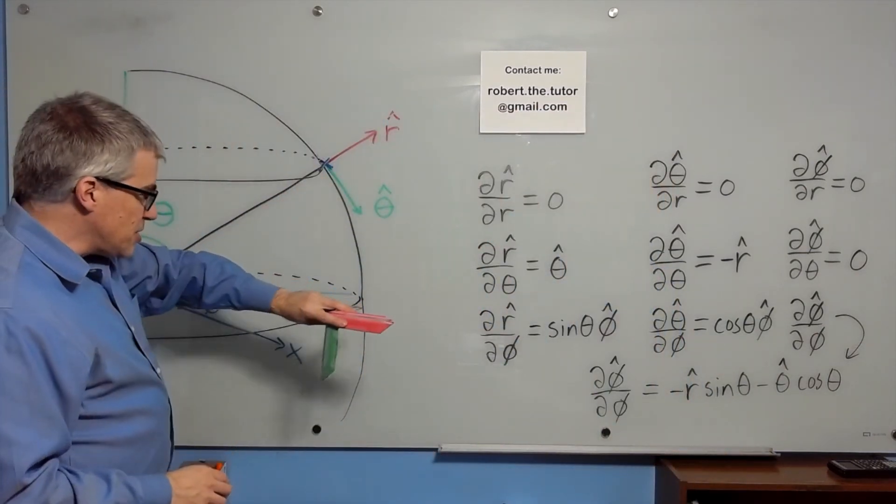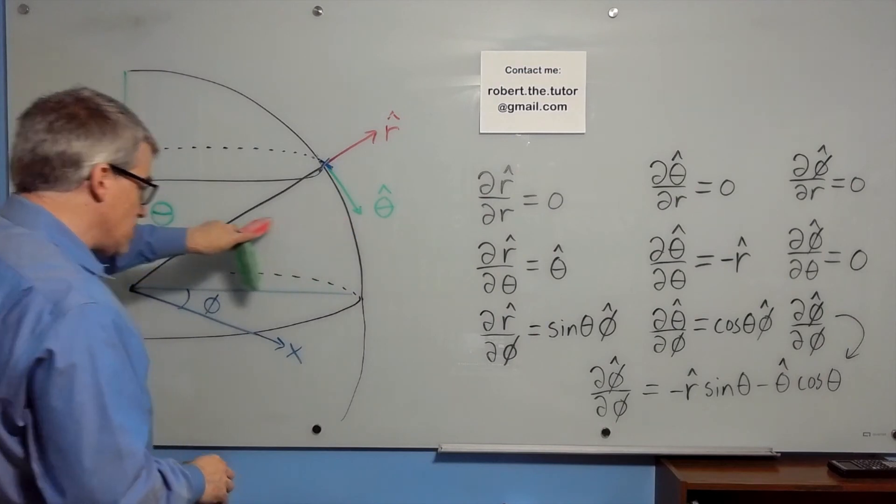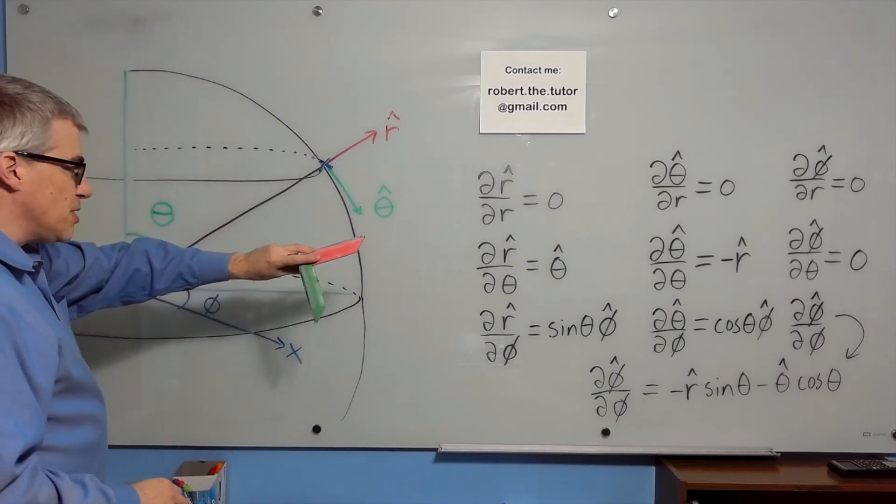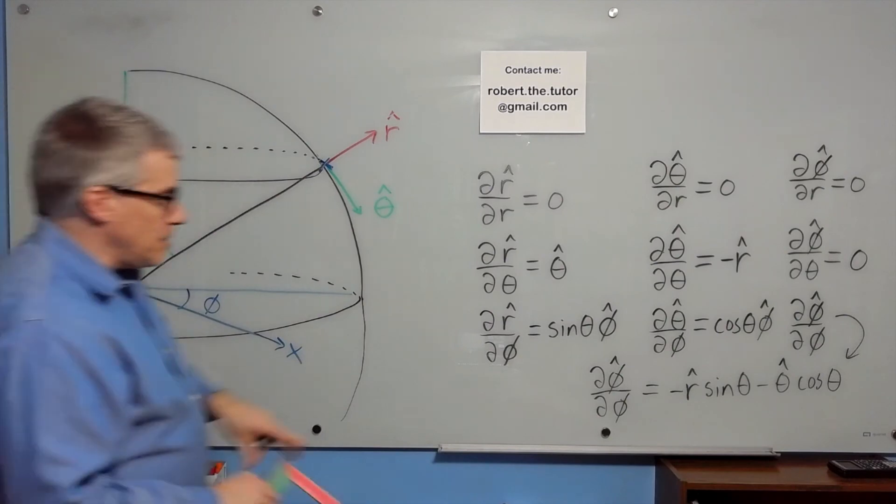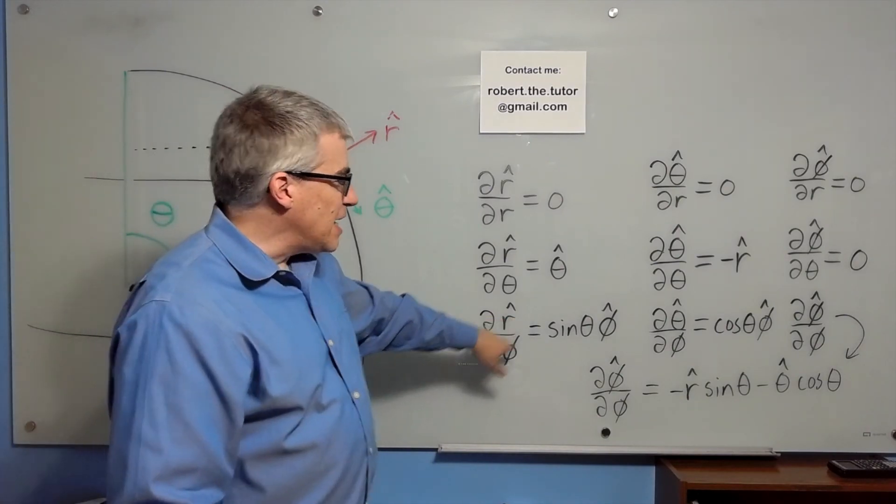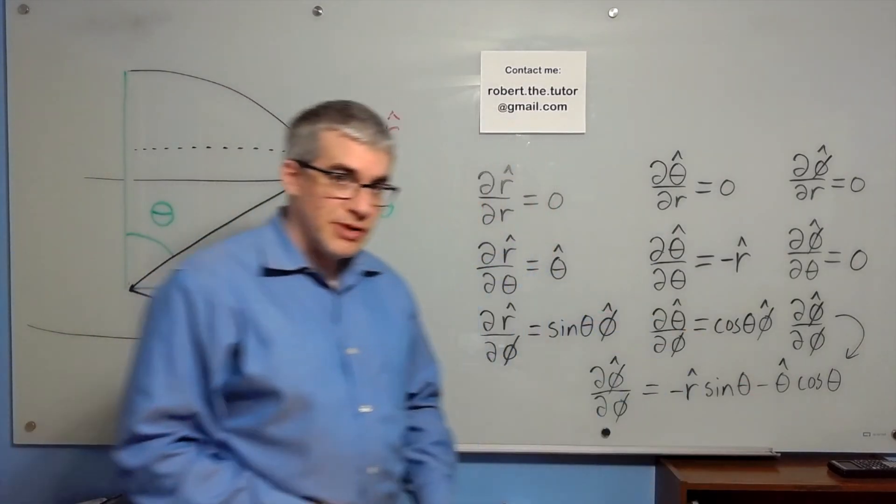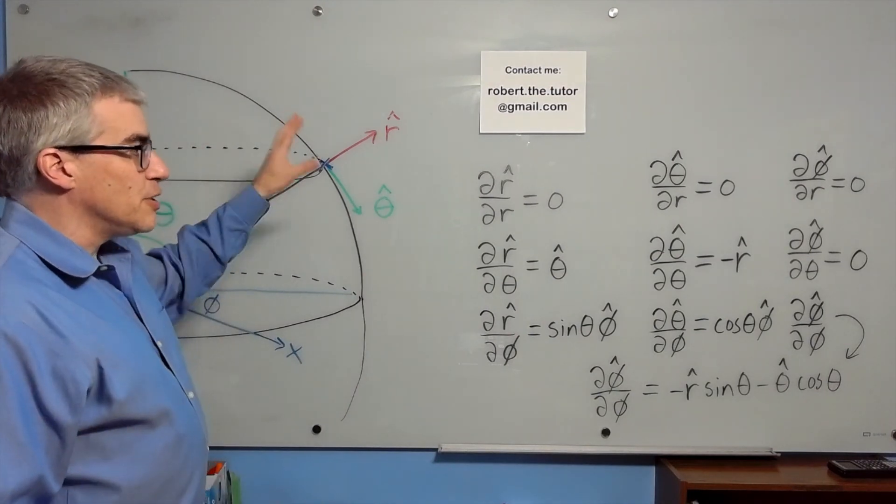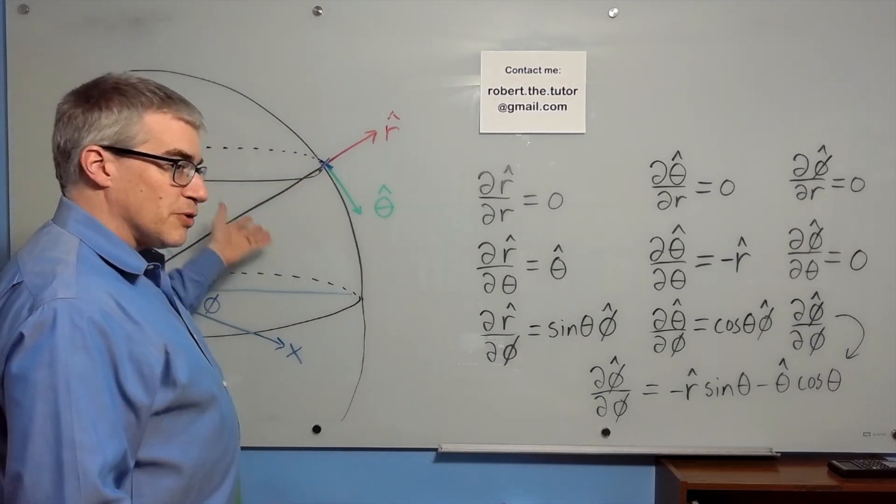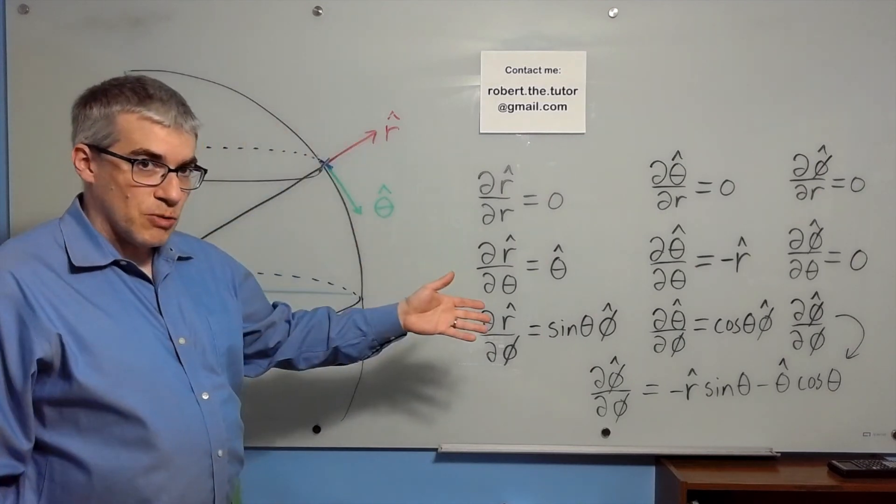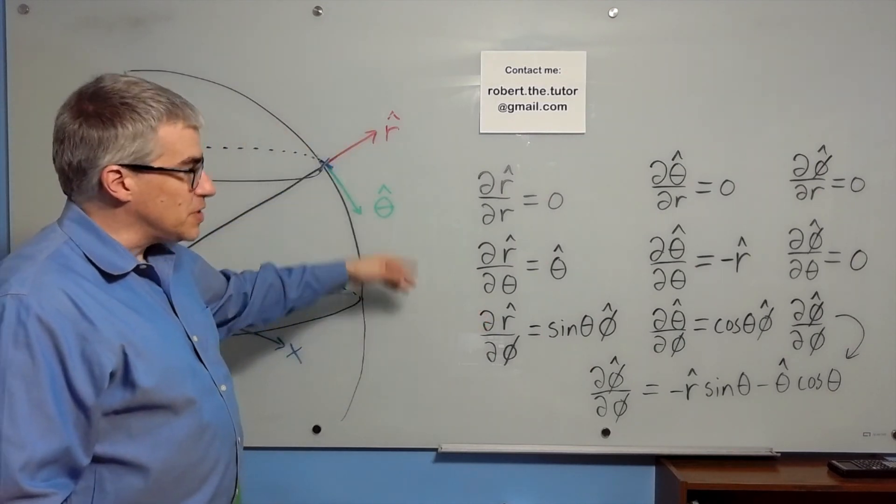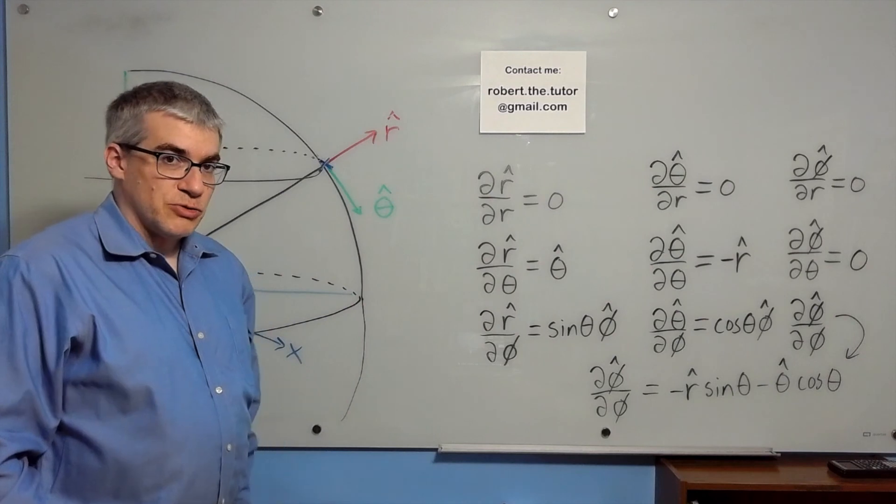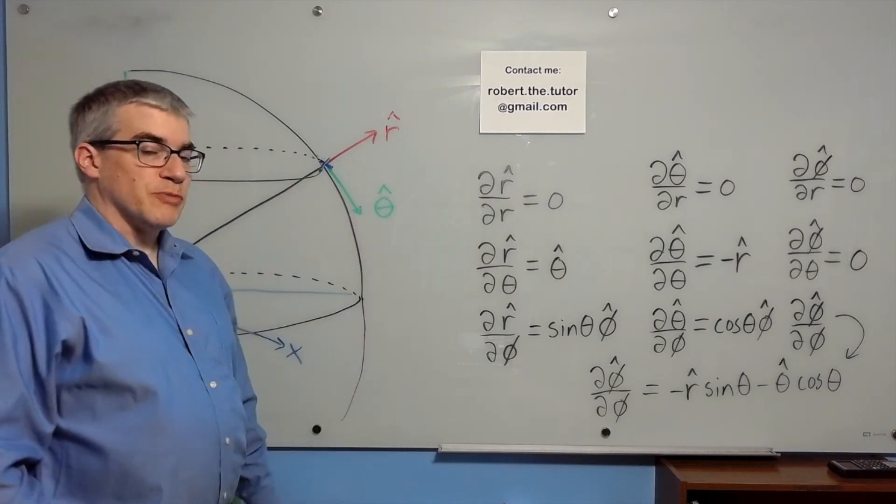When you start swinging around, that's when you start getting all three of them changing. And so with respect to phi, all three of them have non-zero derivatives. If you write out the conversion from spherical coordinates to Cartesian coordinates and take the derivatives, then you can see that these relations are true. It works the same way it works for polar coordinates.